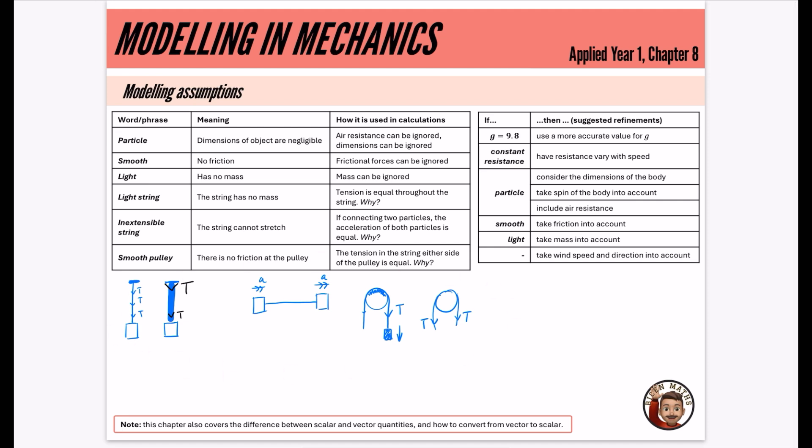So hopefully these bits down here have given you a bit of an idea about why the tension is equal throughout the string, why they are both moving at the same acceleration and why the tension is equal either side of the pulley. Because hopefully if you know why, it should make it a bit easier to remember these things. And it's especially for these parts where it says, how is it used in the calculations? Often, this isn't typically the answer they're looking for. So do make sure that you've had a look at these. Okay guys, I will hope to see you in the next video where we start doing some actual mechanics-y sort of maths-y problems.